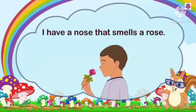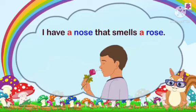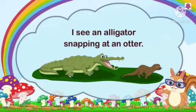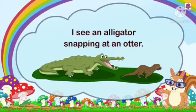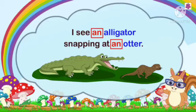Example: I have a nose that smells a rose. We use 'a' because 'nose' and 'rose' start with consonant letters. Another example: I see an alligator snapping at an otter. We use 'an' because 'alligator' starts with the letter A and 'otter' starts with the letter O — those are vowel sounds.